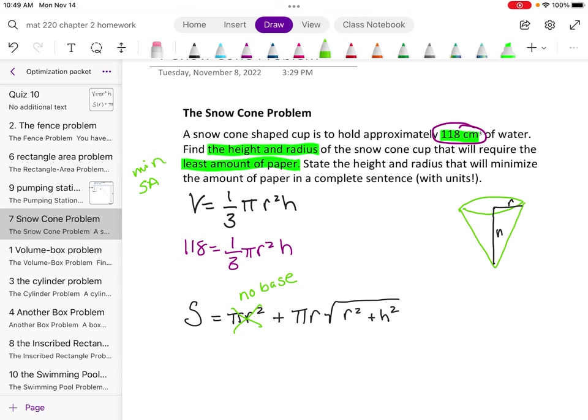And if I notice, I have multiple r's and one h. So I'm going to want to rewrite my volume formula to figure out what h is equal to. So 118 times 3 is 354. And then I'm going to divide by pi r squared. And that will get me what h is. So I'm going to take that and plug it in for h.